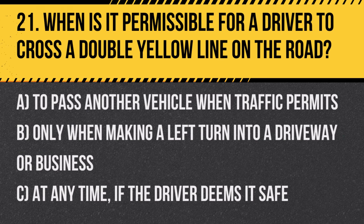Question 21: When is it permissible for a driver to cross a double yellow line on the road? A. To pass another vehicle when traffic permits. B. Only when making a left turn into a driveway or business. C. At any time if the driver deems it safe. Answer: B. Only when making a left turn into a driveway or business. Crossing a double yellow line is generally prohibited except when turning left where permissible, such as into driveways or businesses.